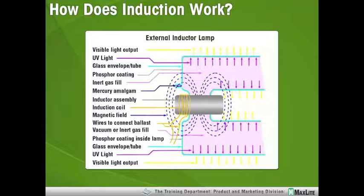So first, the square or round type, also known as the external induction type. Like fluorescent, we have virtually all the same components. We have our phosphor-coated glass, we have our inert gases, we have our liquid or amalgamized mercury. But what we don't have is a filament.